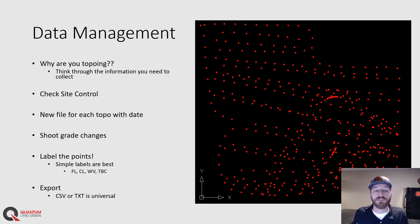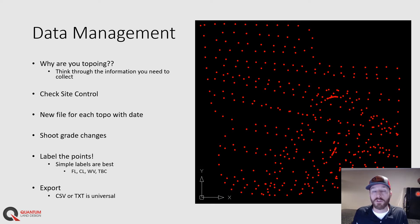It's also nice to start a new file for each topo job and put the date on it. As you survey job sites over time, it can get pretty confusing to have all the points either in one big file or several files that aren't clearly dated and delineated. You'll want to shoot grade changes — you don't necessarily need points everywhere on the job site, just where the grade changes so that can be represented back in the computer in the office.